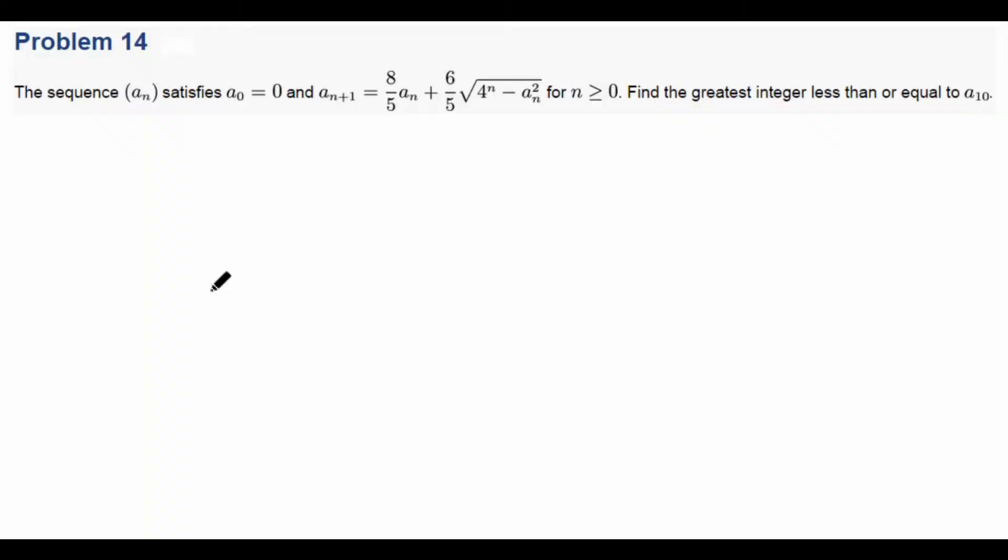Hi guys, it's Daniel here and today we are going to solve an AIME problem. I think this is AIME 2009, AIME 2, problem number 14. So let's first look at the problem. The sequence A_n satisfies A_0 equals 0 and A_{n+1} equals 8/5 A_n plus 6/5 square root of 4^n minus A_n squared for n greater than or equal to 0. And we have to find the greatest integer less than or equal to A_10.